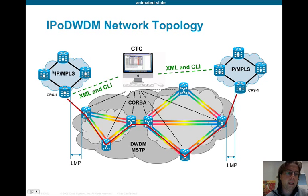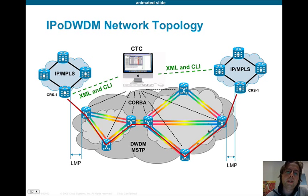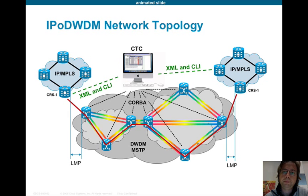In this example, we have a cloud of IP routers based on CRS1s, and the DWDM transport is represented by ONS15454 MSTP, managed by the CTC — Cisco Transport Controller. CTC uses a proprietary CORBA interface from the network manager down to the single MSTP network element in order to retrieve information and set the working point of the different network elements.